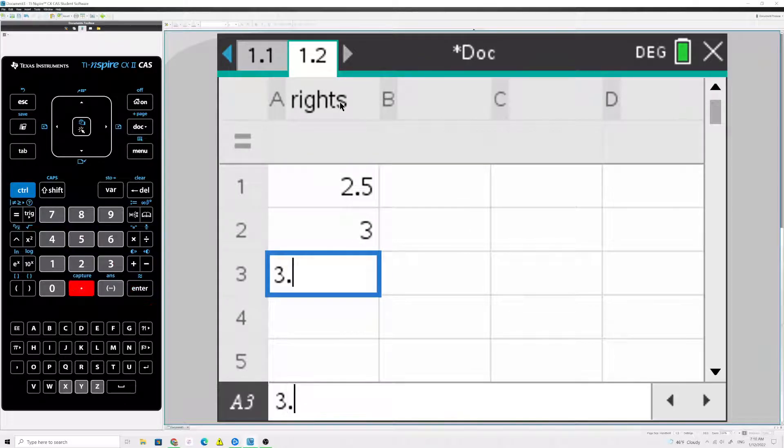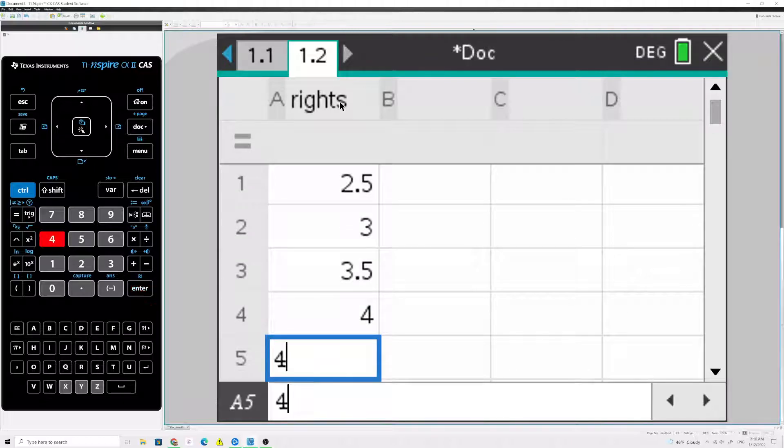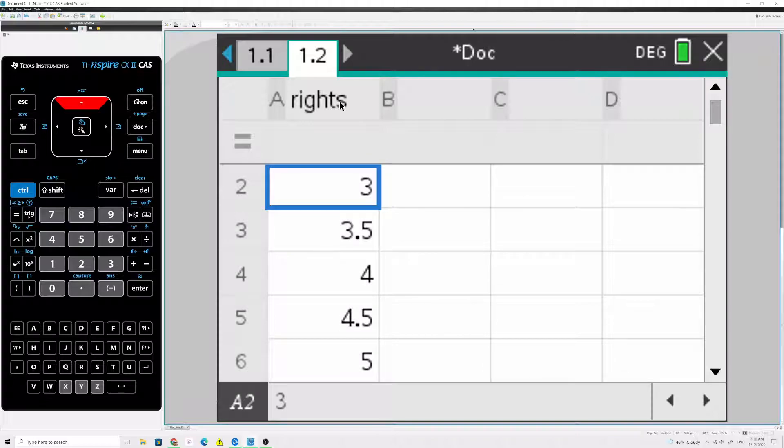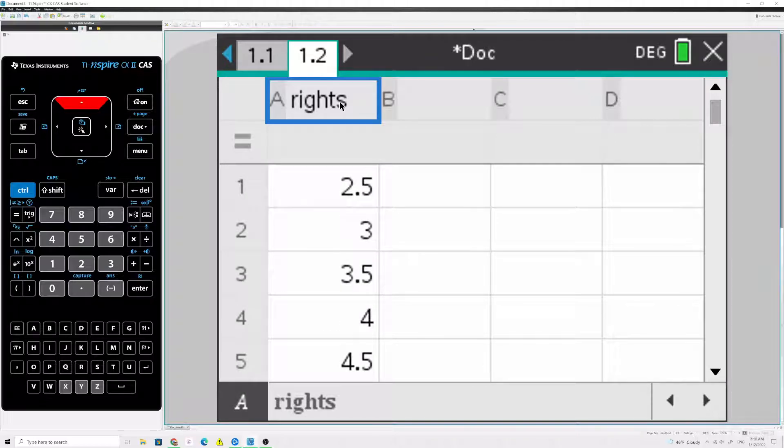then 3, then 3.5, 4, 4.5, and we stop when we get to the last right endpoint, which is 5. So those are all of the right endpoints.